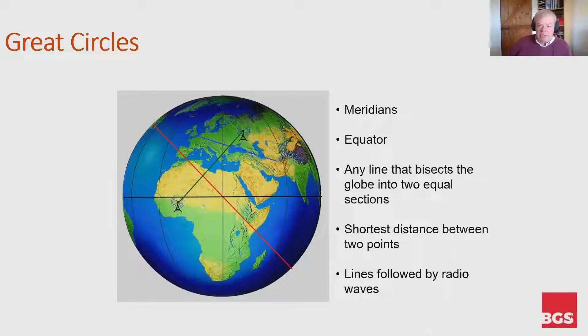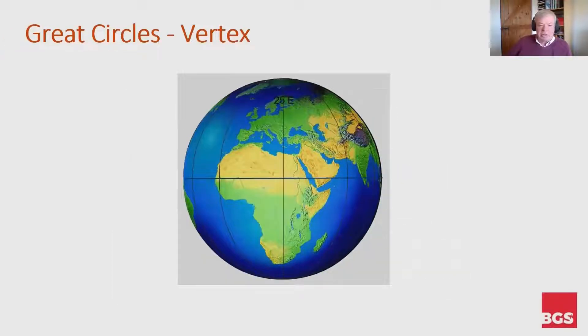But first of all, let's talk about the vertex properties of a complete great circle. In this example, we have a great circle track. Now that track could be going predominantly in an easterly direction, or it could be running down the other way and going in a southwesterly direction on this particular face.